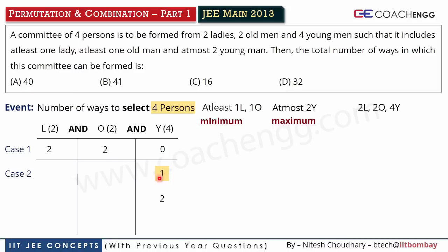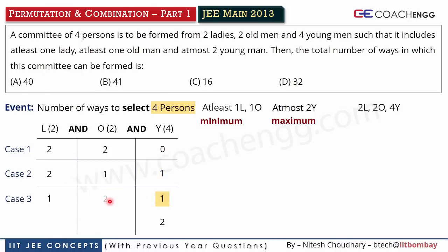What other case is possible? Second case: when Y = one young man selected. In that case I can select one old man and two ladies — that satisfies the at least one condition, and the sum is four. Another sub-case: one lady and two old men with one young man — sum is again four, and the at least condition is also satisfied. So you will notice that in the first three cases, the at least condition is automatically satisfied.